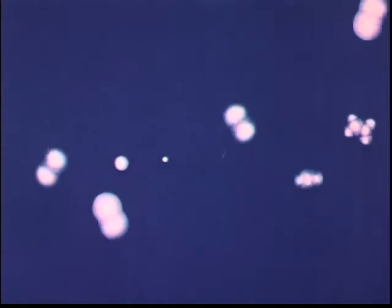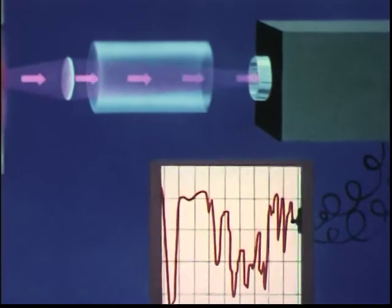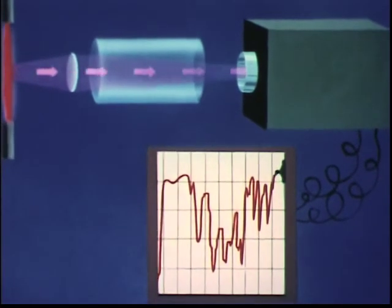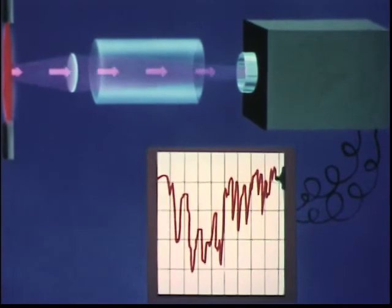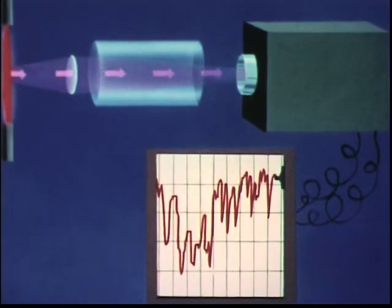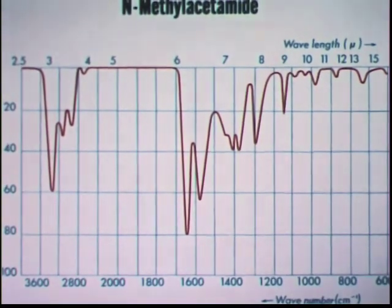When a molecule absorbs energy to increase its vibrational level, it generally absorbs light of the same frequency as one of its normal modes. So by measuring the frequencies of light absorbed, the frequencies of its several normal modes of vibration are measured. From these vibrations, we derive information regarding energy levels and strengths of chemical bonds.